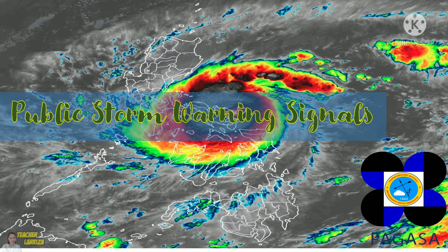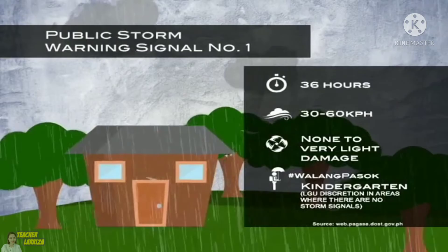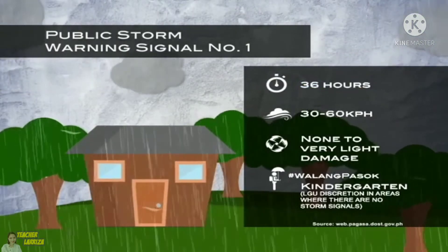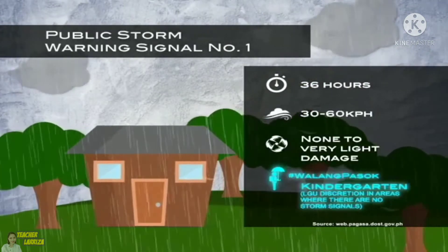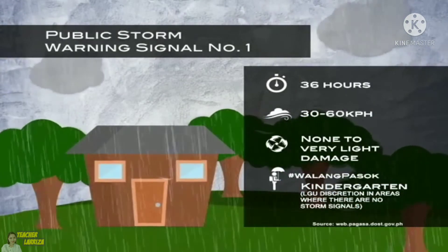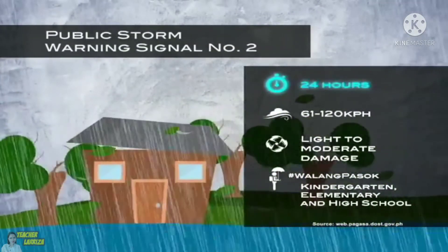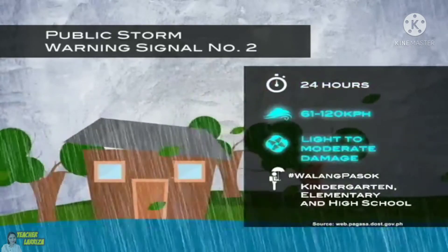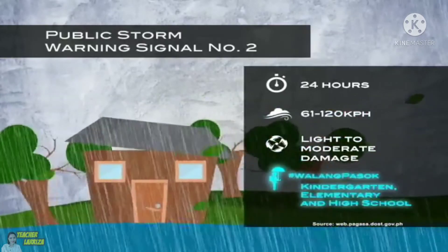Public storm warning signals — let us learn the warning levels from PAGASA about an approaching typhoon. Signal No. 1: The typhoon is expected within one and a half days. Winds may cause very minor to no damage. No classes for preschool. Severe weather bulletins are issued every six hours. Signal No. 2: The typhoon may arrive within one day. It carries slightly to moderately strong winds. No classes for preschool, elementary, and high school students.